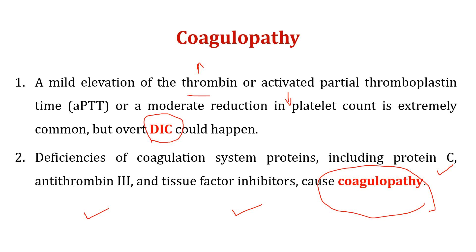Regarding coagulopathy, there is mild elevation of thrombin or activated partial thromboplastin time with moderate reduction in platelet count, which is thrombocytopenia. Finally, this will contribute to DIC — disseminated intravascular coagulopathy — which is a serious, severe, acute, and life-threatening condition for critically ill patients. Deficiency in protein C, antithrombin, and tissue factor inhibitors can also cause coagulopathy impairment.